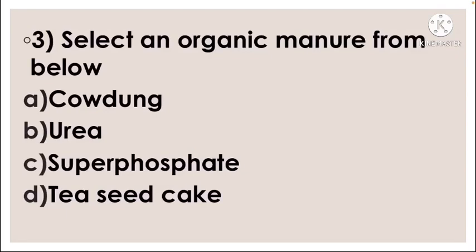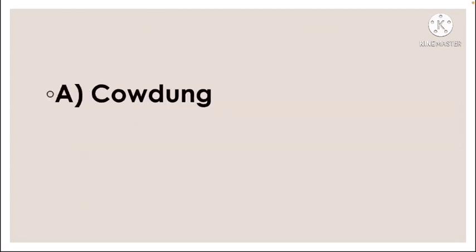Next question: Select an organic manure from below — option A cow dung, option B urea, option C super phosphate, option D tea seed cake. The correct answer is option A, cow dung.